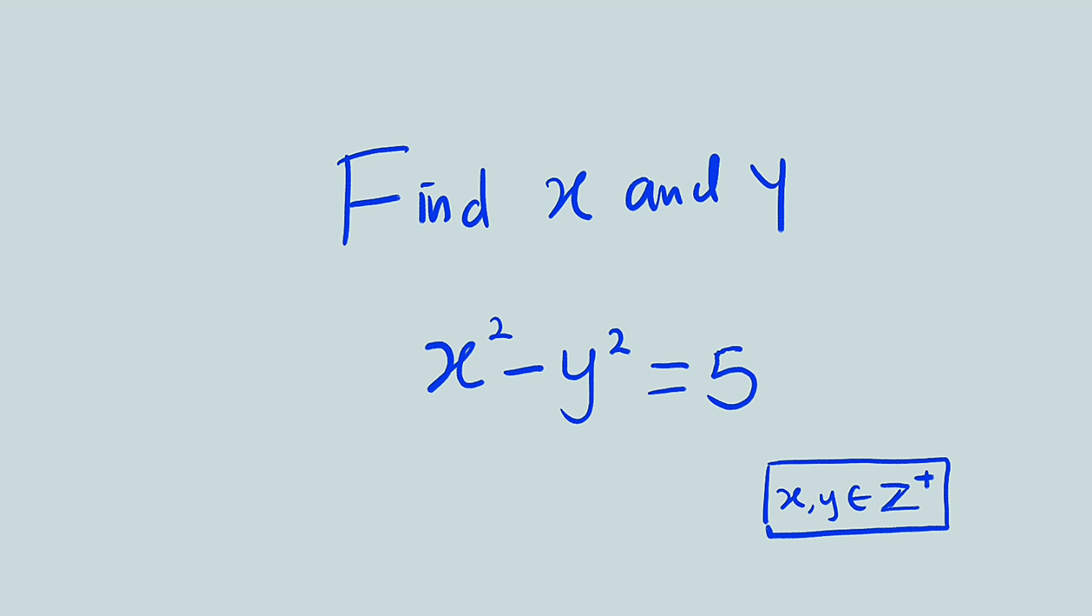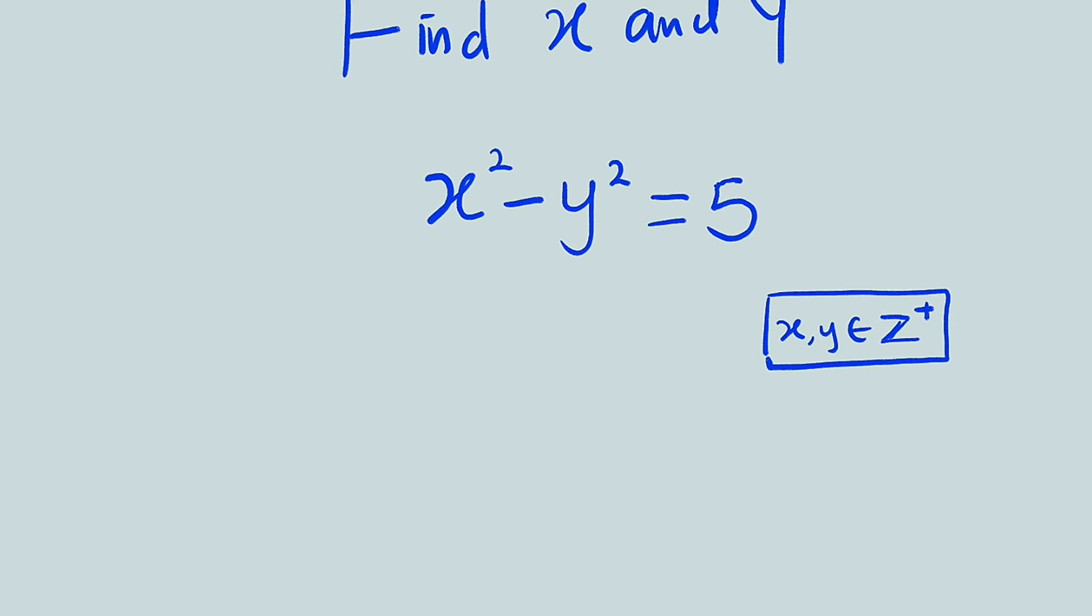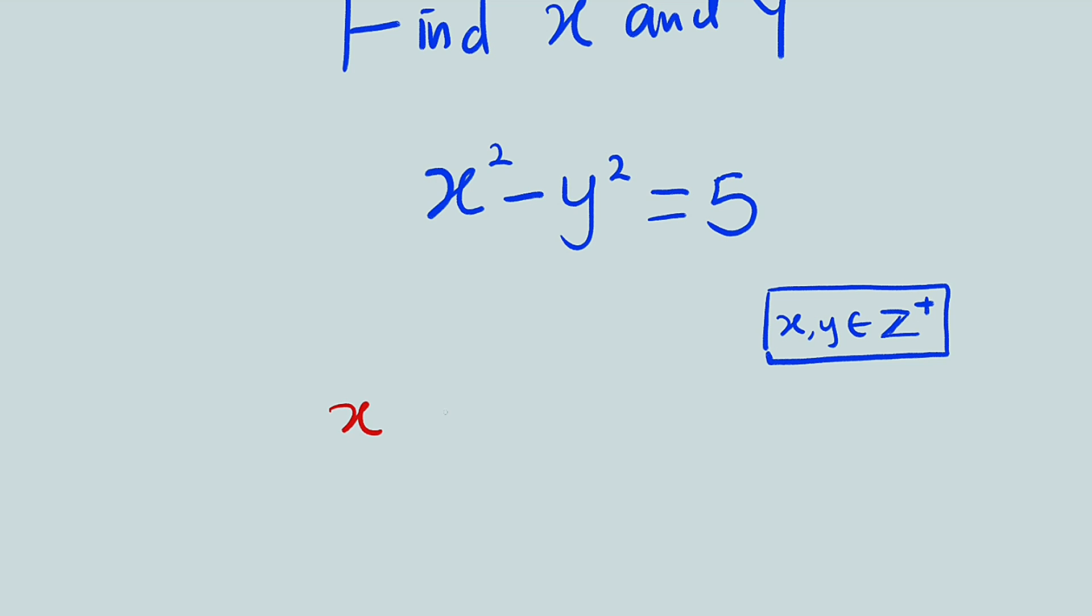Okay, this is a condition. Before we start, you should know that x squared minus y squared is nothing but difference of two squares, which we can express as x minus y multiplied by x plus y. And all of this equal to 5.